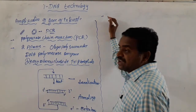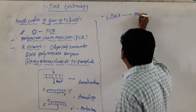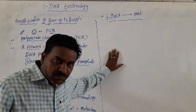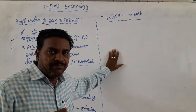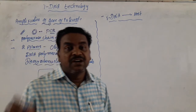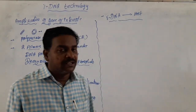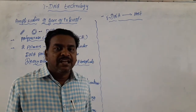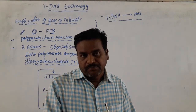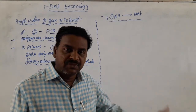Coming to another step: introduction of recombinant DNA into a host. In order to insert this recombinant DNA into a suitable host — whether bacteria, plant, or animal — the host must be competent to take up the recombinant DNA. When bacterial cells are treated with a divalent cation like calcium, it renders the cell membrane porous, leading to the formation of some pores.